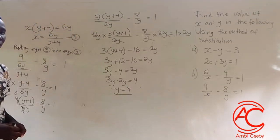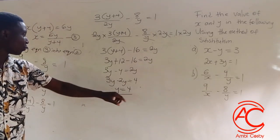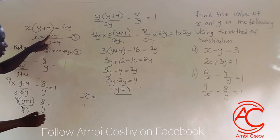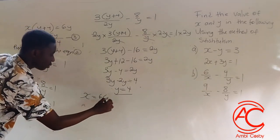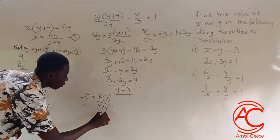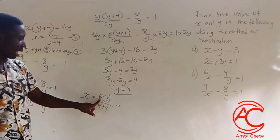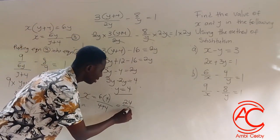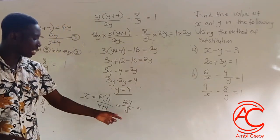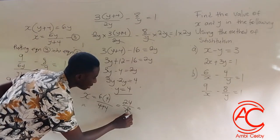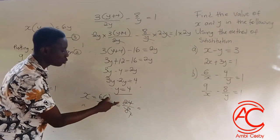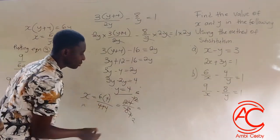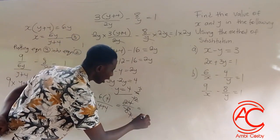Now let's find x by substituting y equals 4 into equation 3. So x is equal to 6 times 4 all over 4 plus 4, which is 24 over 8. Simplifying, x is equal to 3.